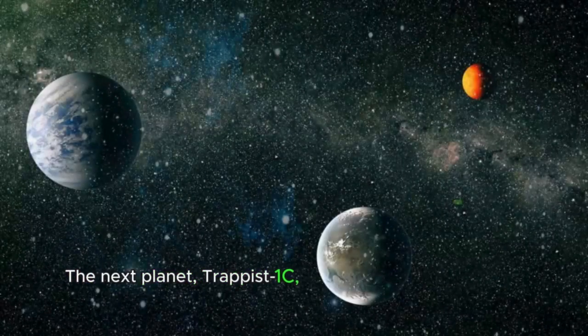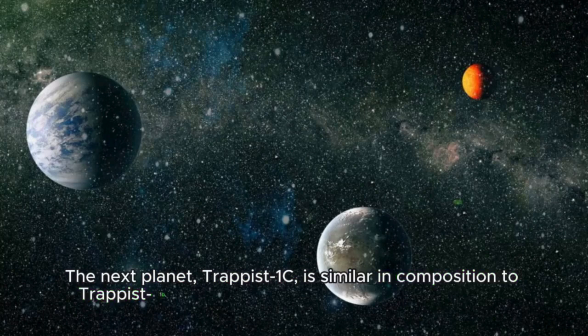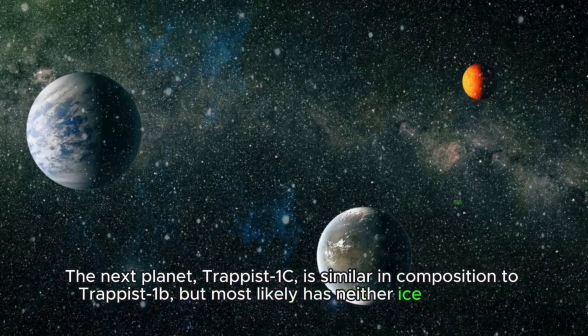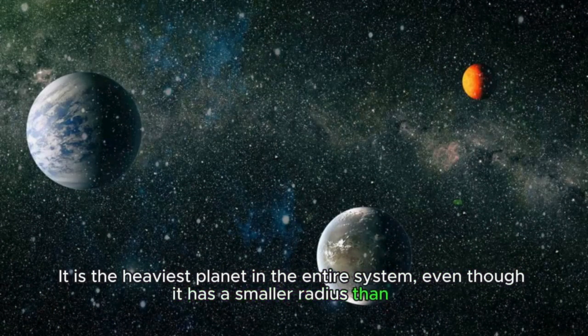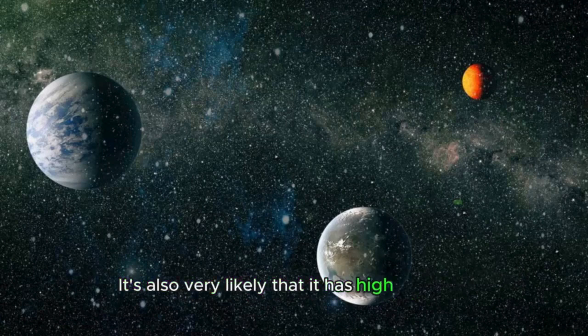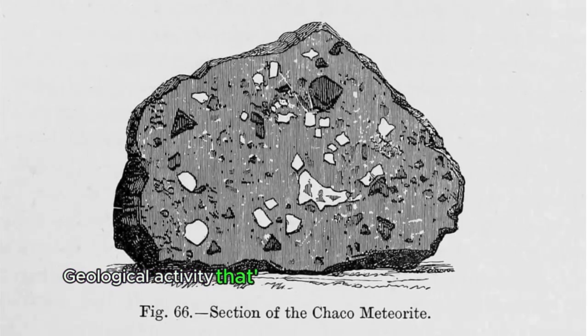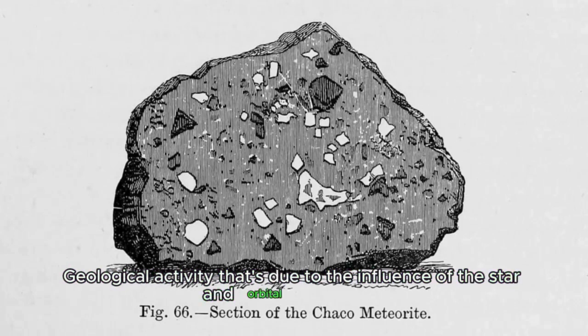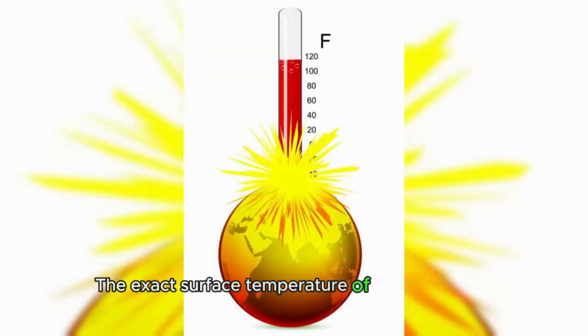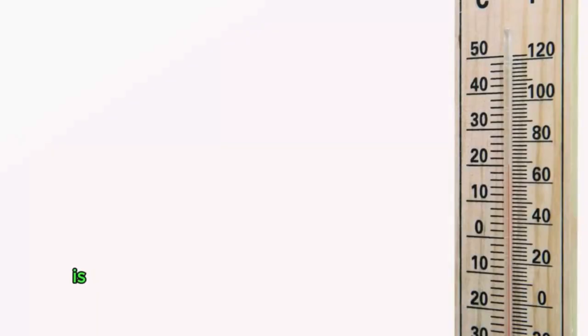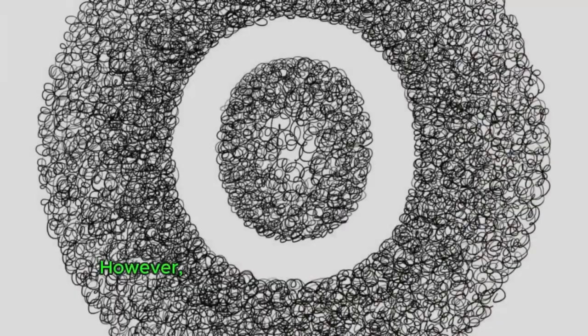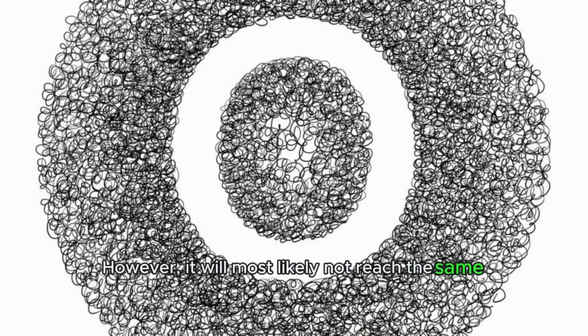The next planet, TRAPPIST-1c, is similar in composition to TRAPPIST-1b, but most likely has neither ice nor water. It is the heaviest planet in the entire system, even though it has a smaller radius than 1b. It's also very likely that it has high levels of geological activity due to the influence of the star and orbital resonance. The exact surface temperature of 1c is unknown. The star can heat it up to about 158 degrees Fahrenheit, but the internal activity of the planet is capable of raising the temperature several hundred degrees. However, it will most likely not reach the same temperatures as 1b due to the atmosphere, which is likely less dense.